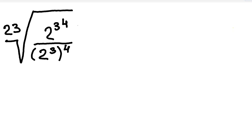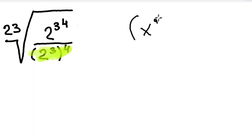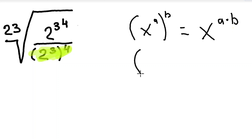Inside the 23rd root, let's start with the denominator: 2 to the power of 3, in parentheses, to the power of 4. For exponents, there is a general rule that states x to the power of a, in parentheses, to the power of b, is equal to x to the power of a times b. So let's substitute our values — we have 2 to the power of 3 to the power of 4.